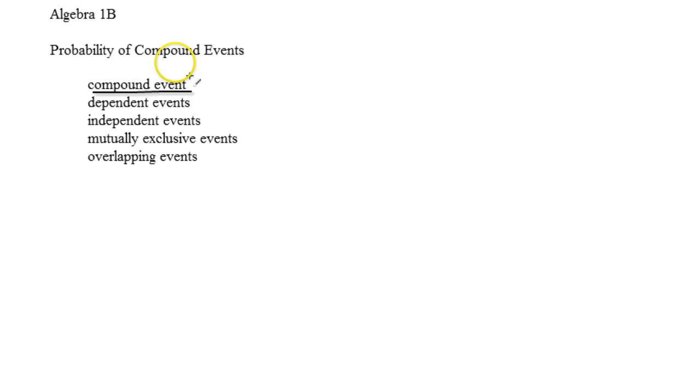Compound events are just events that are connected by 'and' and 'or'. So first off, let's start talking about events that don't have anything in common. When events don't have anything in common, we call that mutually exclusive events.